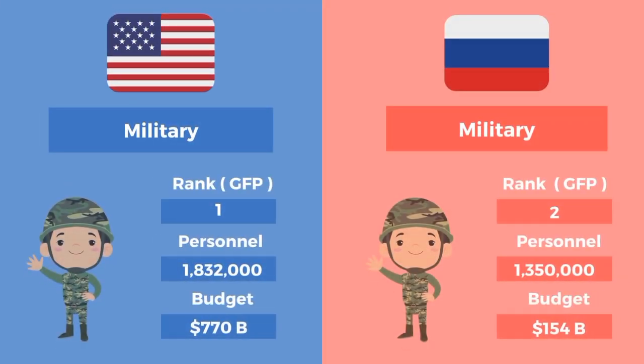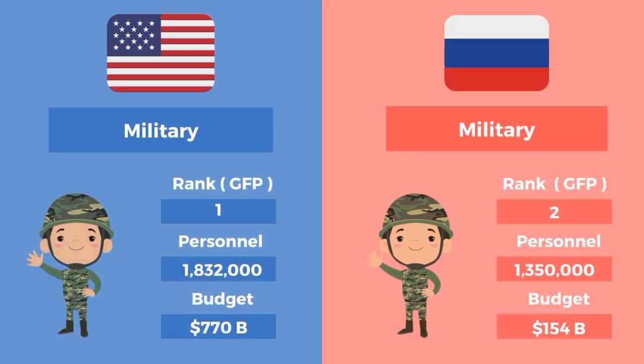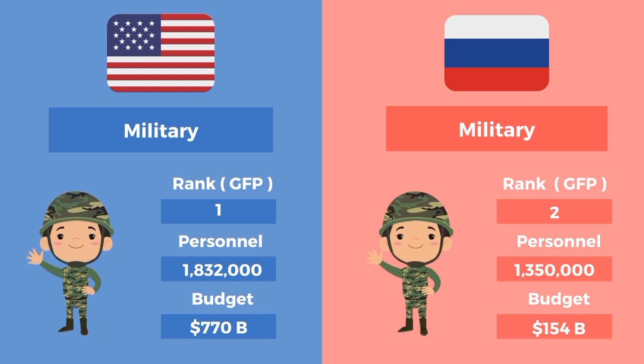The military rank of the US is 1st, with personnel of 1,832,000 and a budget of 770 billion dollars. The military rank of Russia is 2nd, with personnel of 1,350,000 and a budget of 154 billion dollars.